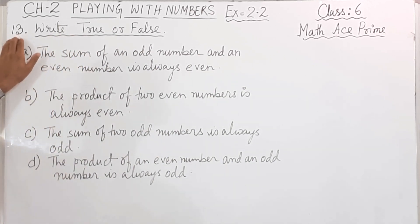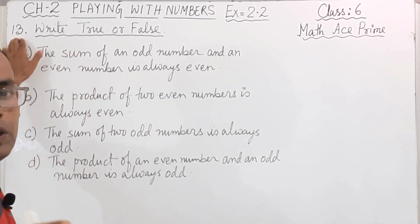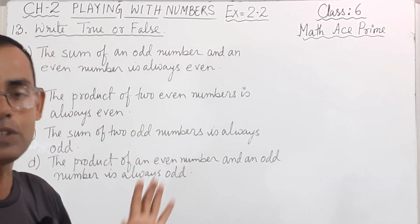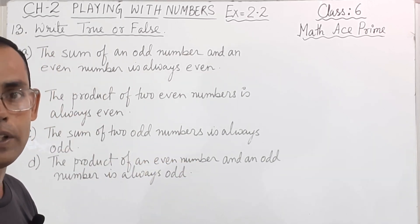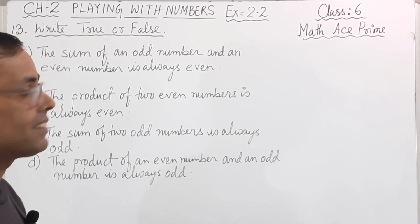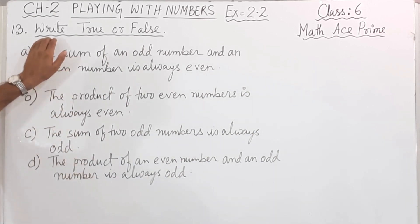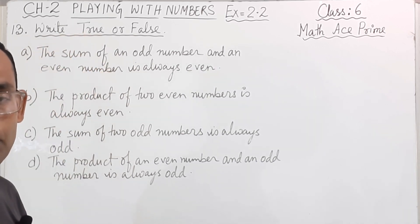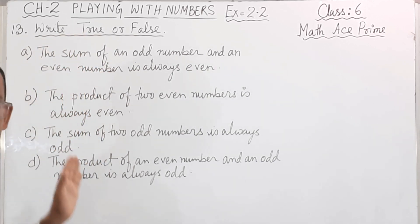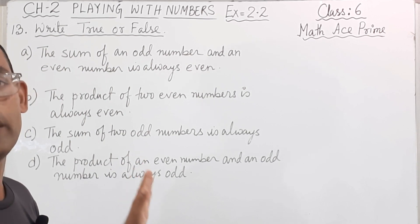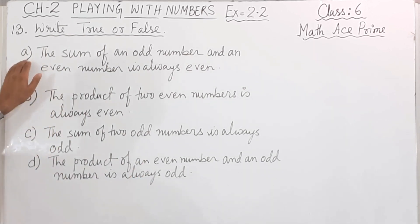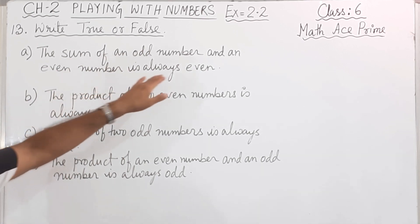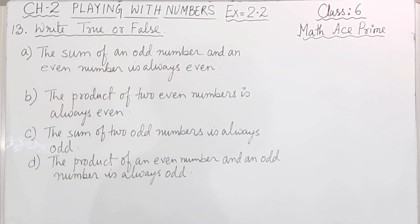Now we will solve question number 13. Question number 13 is very easy — only a few sums are left: 13, 14, 15. So we will complete this exercise today. Question number 13 is true or false — that means you have to say whether each statement is correct or incorrect. The first statement: the sum of an odd number and an even number is always even.